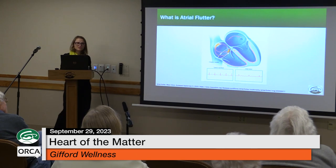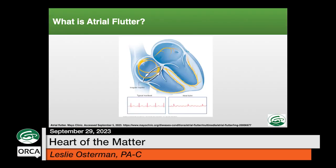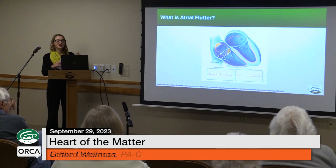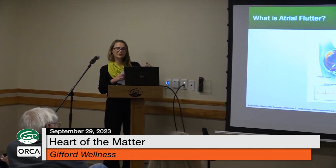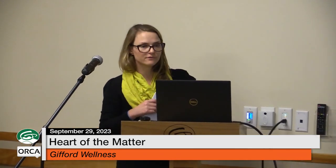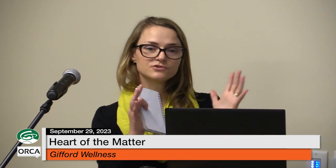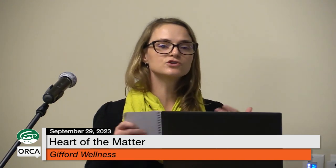Atrial flutter is similar in that the normal electrical conduction is not coming from the SA node — it's coming from a different place in the atria. But unlike atrial fibrillation, which is chaotic random quivering, flutter has a more regular pattern following a loop. More regularly, it moves down to the bottom chambers. On the EKG you can see the very regular rhythm with a coarse sawtooth pattern of flutter waves in between. There are two kinds: typical and atypical, designating which loop it goes through.